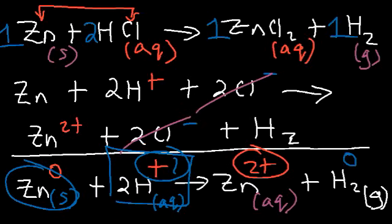Metals are usually good reducing agents — these are the active metals at the top of the activity series, like sodium, magnesium, and aluminum. Metals like fluorine and chlorine are very good oxidizing agents. Reducing agents like to give away electrons; oxidizing agents like to receive electrons.